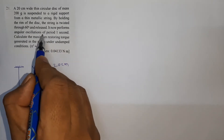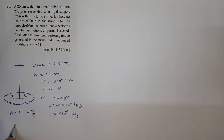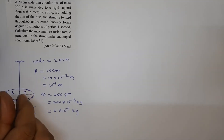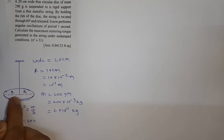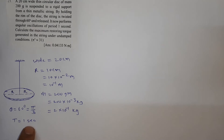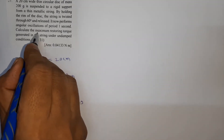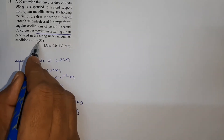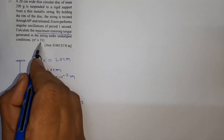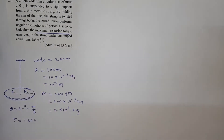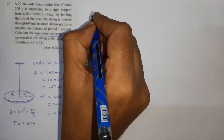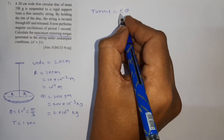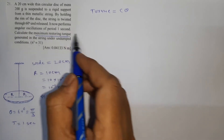The disc performs angular oscillations with a period of one second. When we twist the disc and release it, it performs angular SHM with period T = 1 second. We need to calculate the maximum restoring torque generated in the string under undamped conditions. The formula for restoring torque is τ = cθ, where c is the torsional constant.